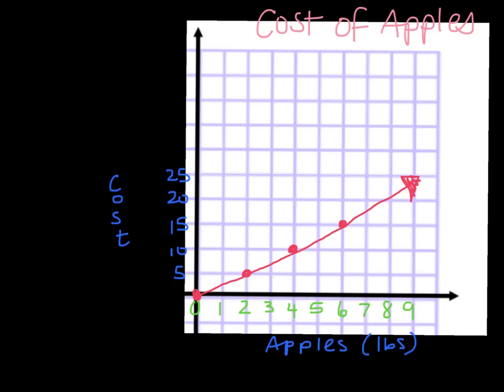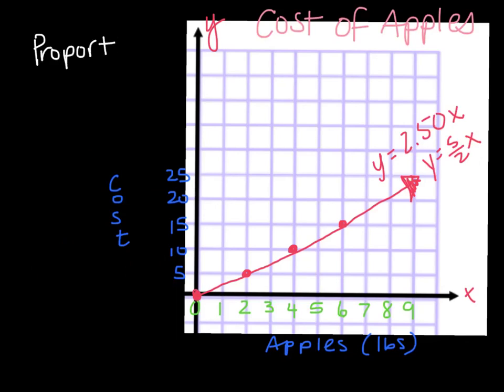I'll add my x and y axis labels to complete the graph. The equation is y = 2.50x, or equivalently y = (5/2)x. Now, is this proportional? Proportional means it changes by the same amount every time, goes through the origin, and forms a straight line. It does go through the origin and is a straight line, so yes, it is proportional.